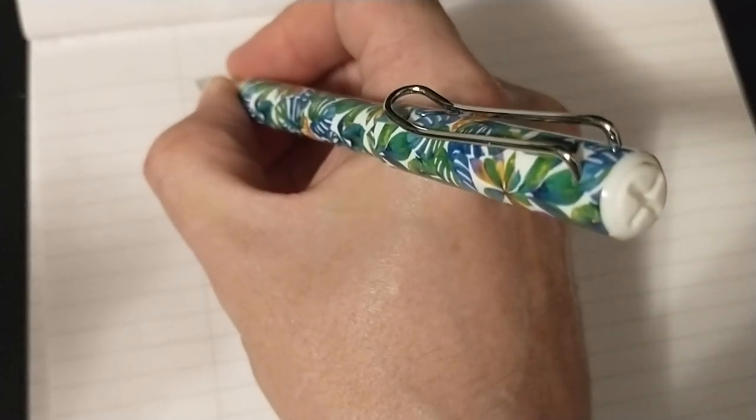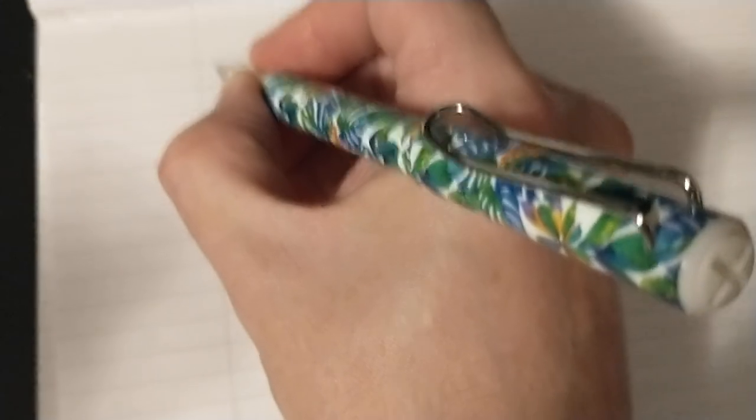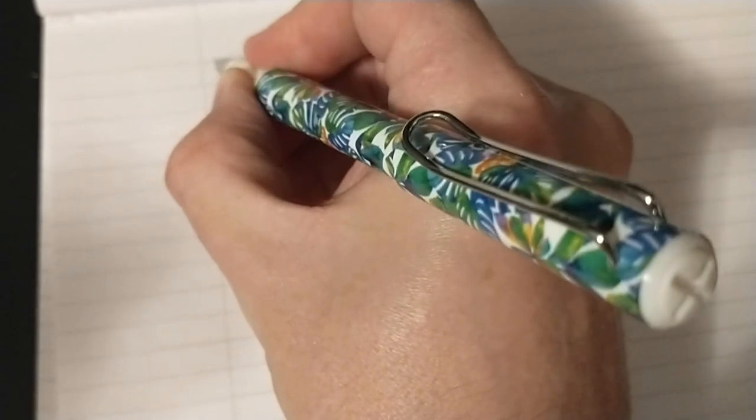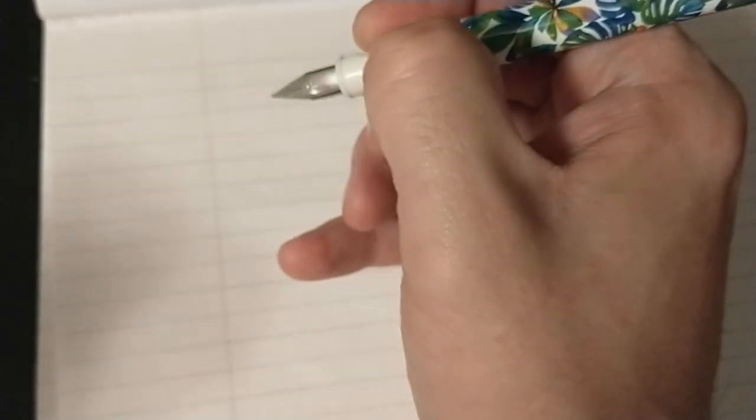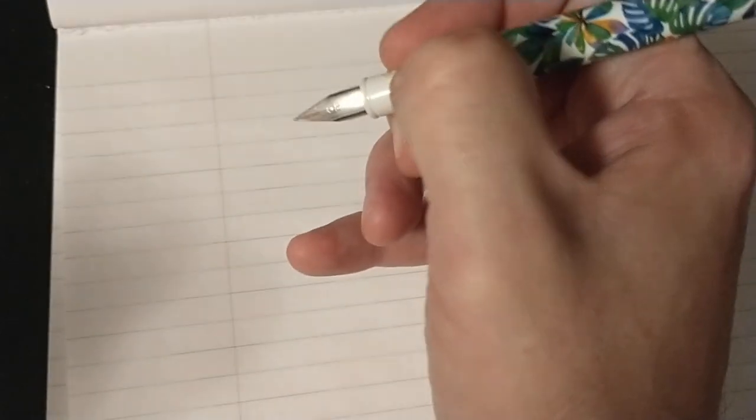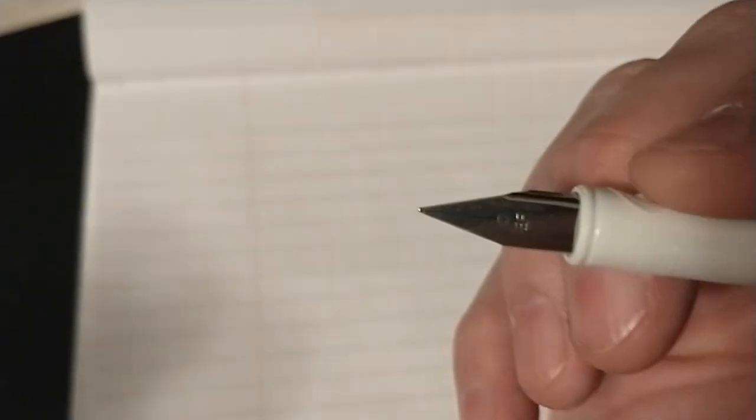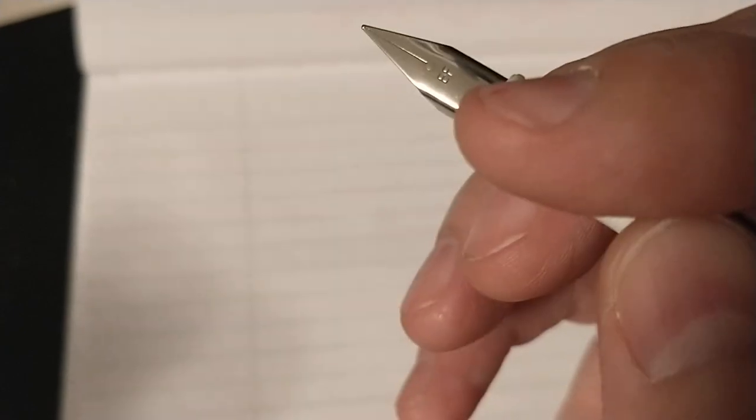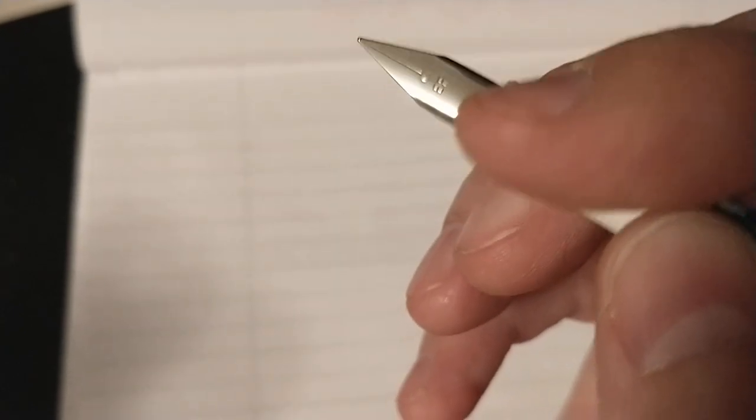For being a dollar store item, I wouldn't expect it to be all that great, but here we go. And it does have a steel EF nib, it looks like. EF nib.